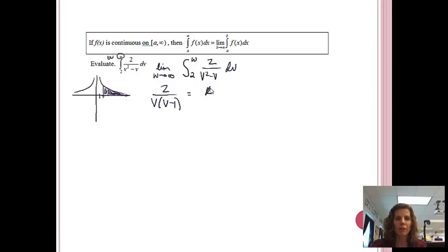If I turn this into a partial fractions problem, that's going to be 2 over v times v minus 1. We'll separate it into a over v plus b over v minus 1. Next, I'll get a common denominator over here.